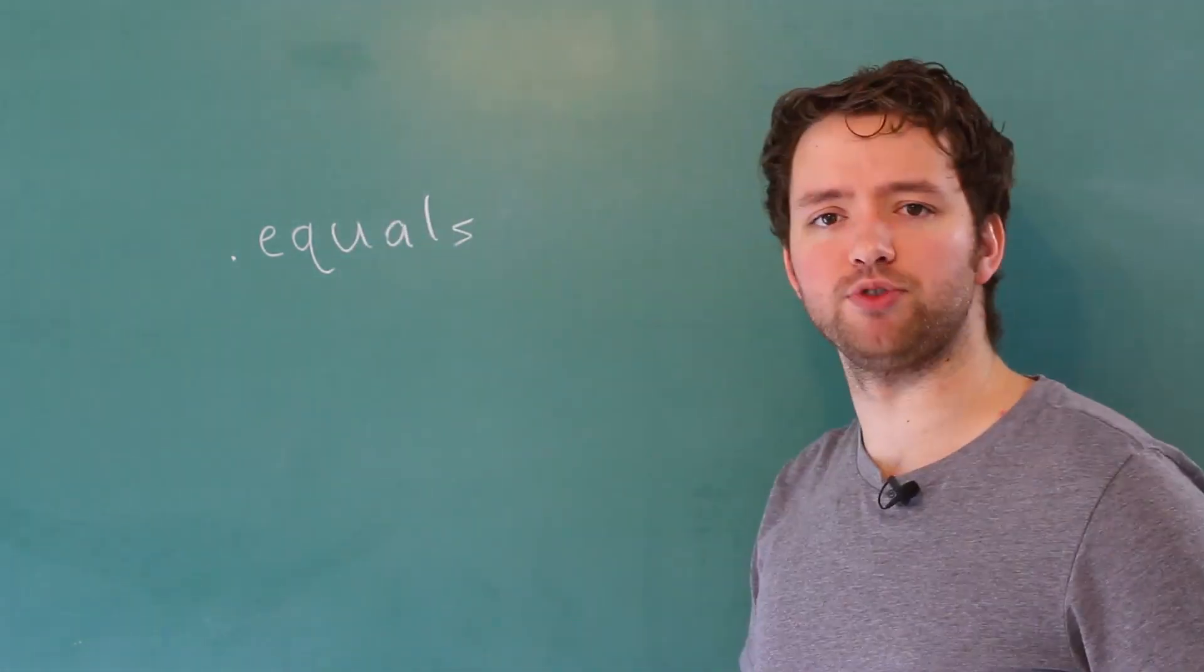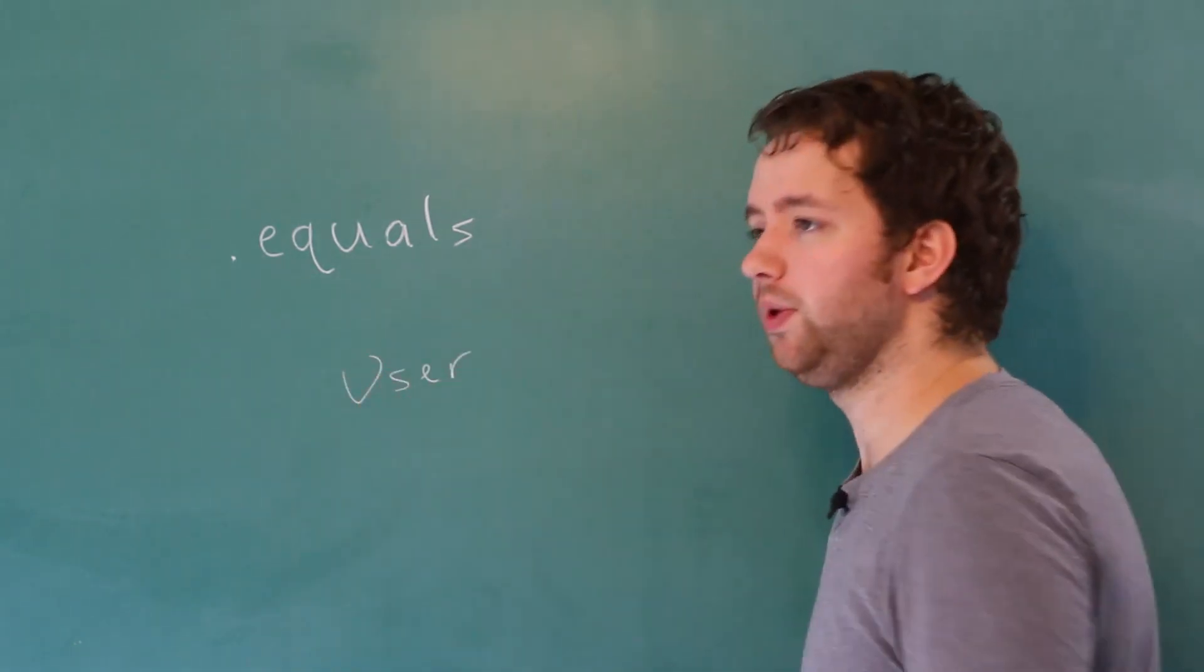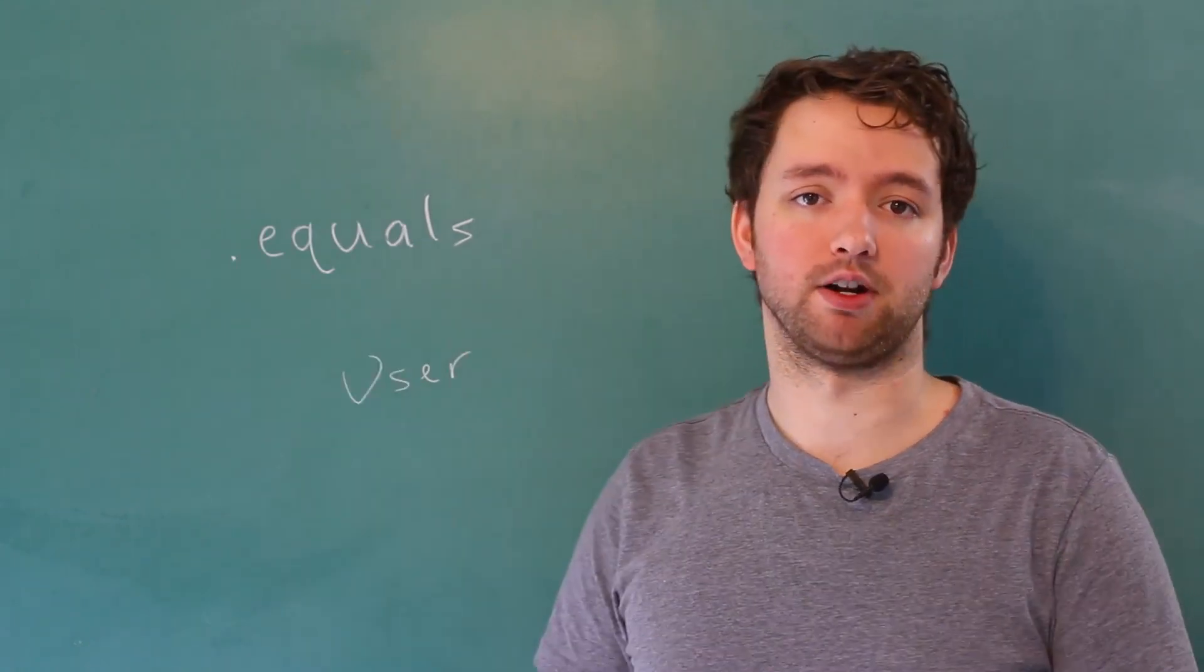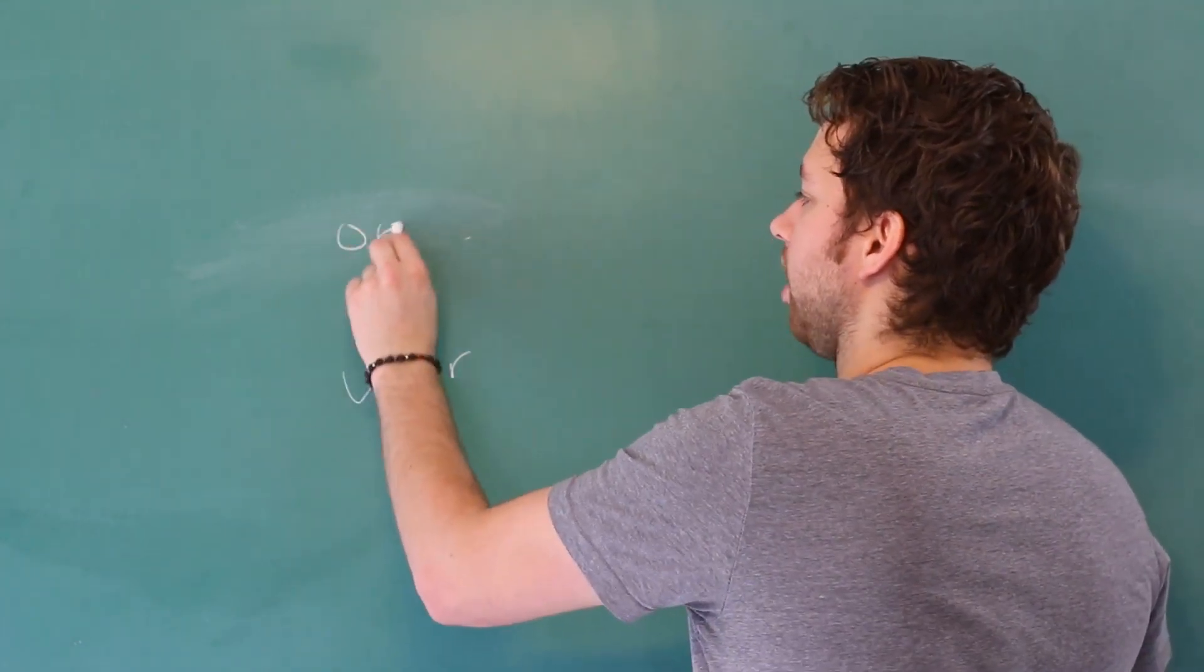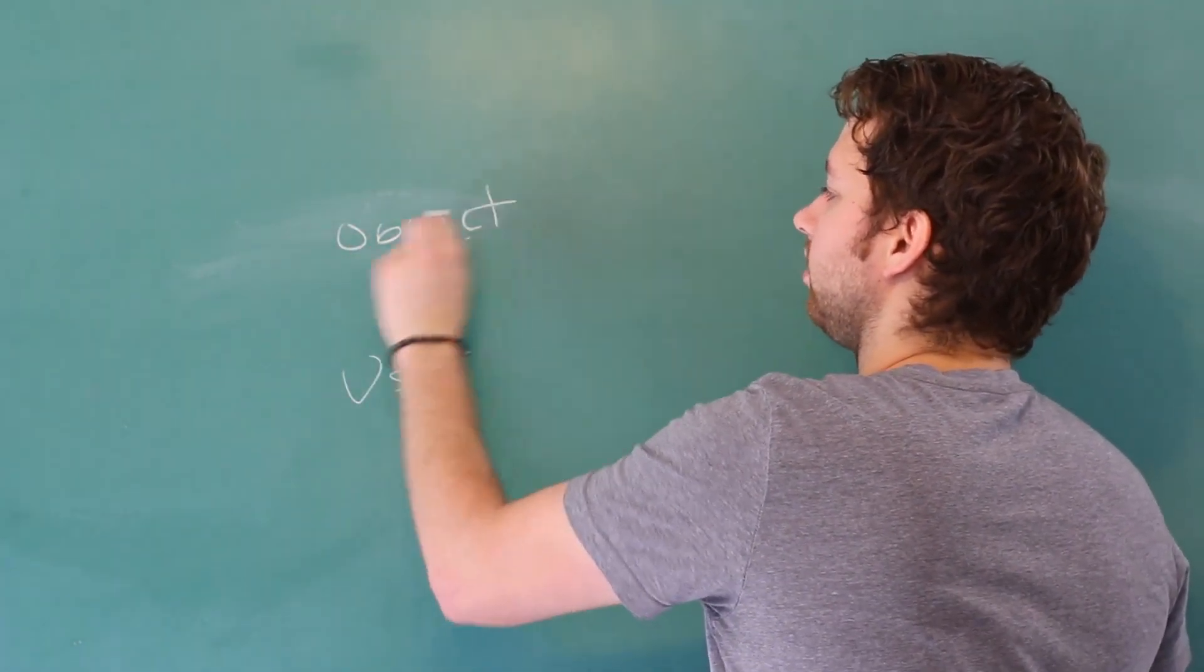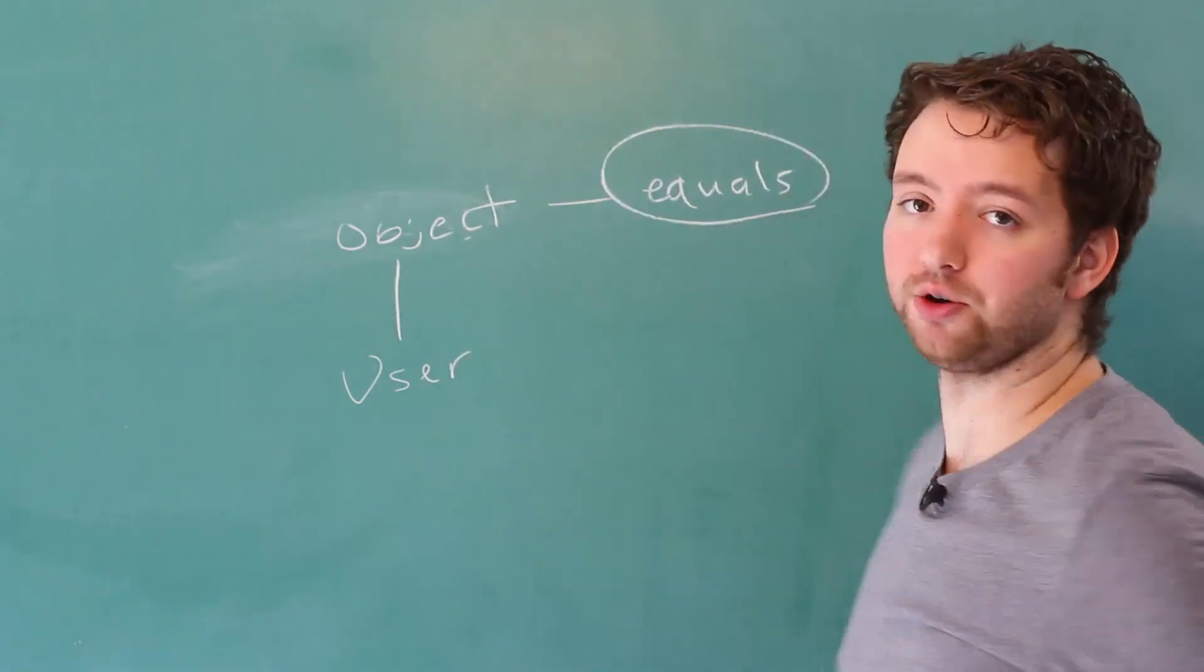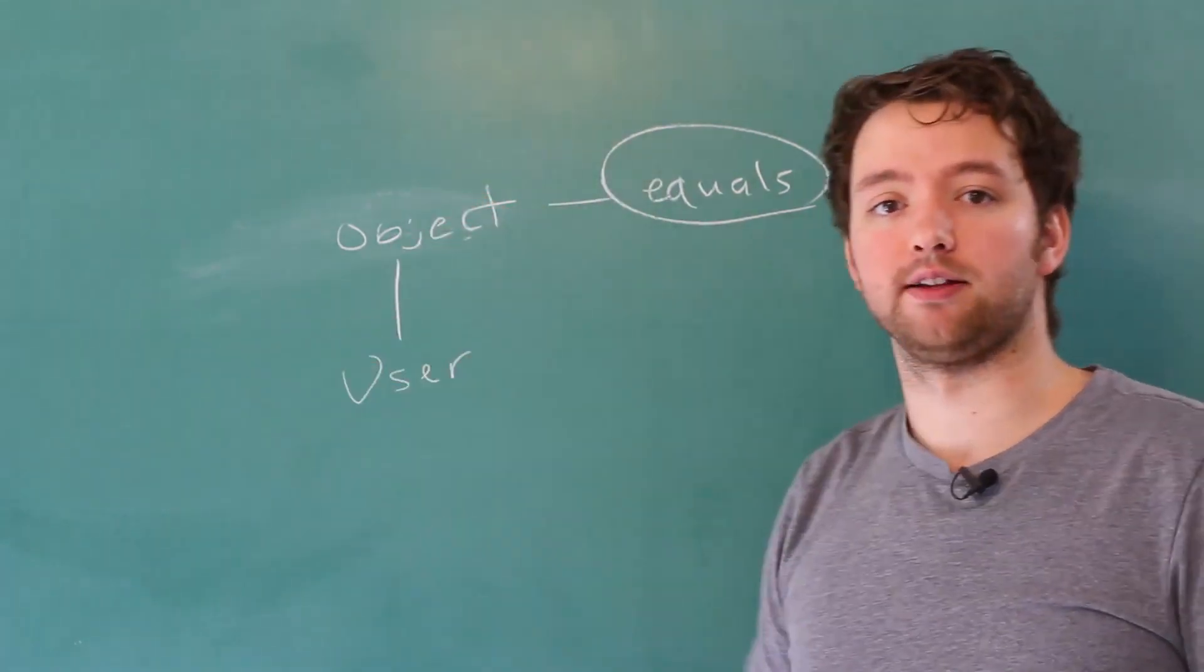So we might make a custom object such as user and we can use this dot equals method even if we never created that method inside of our class. That's because in the hierarchy, user inherits from object. And one of the things inside of object is a method called equals. And that's going to basically flow down to user automatically.